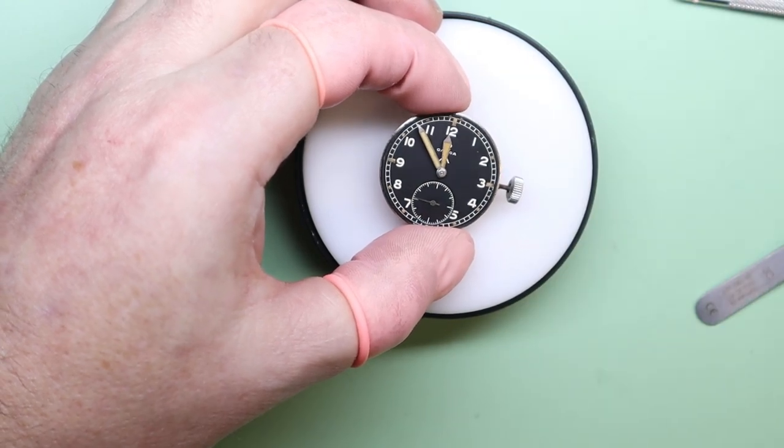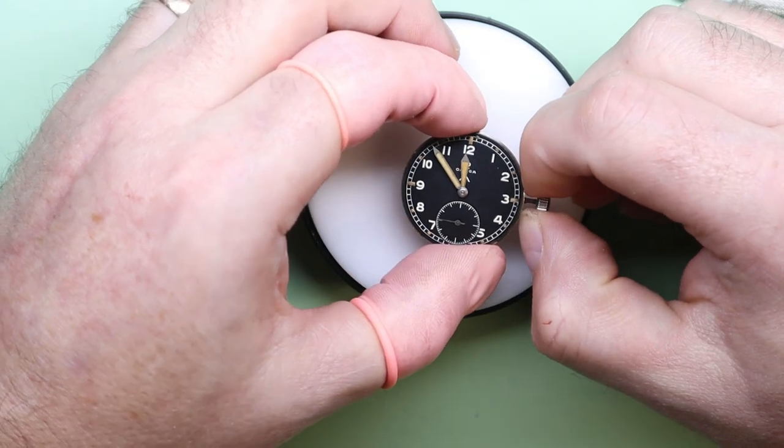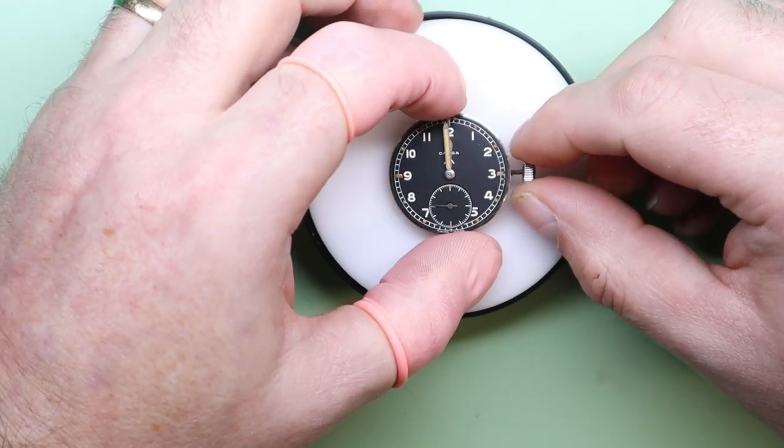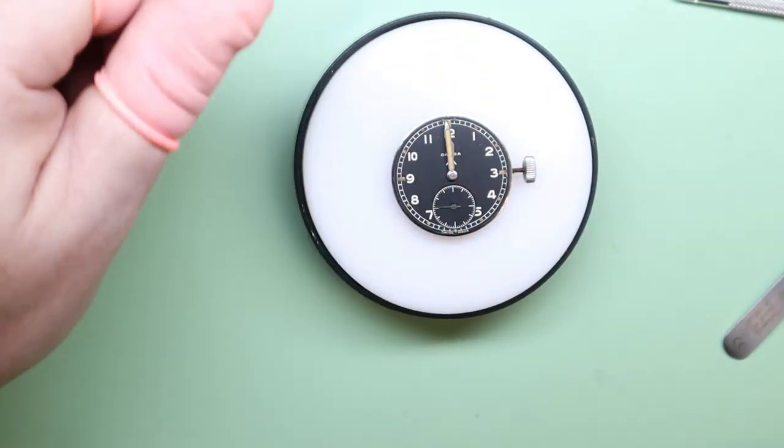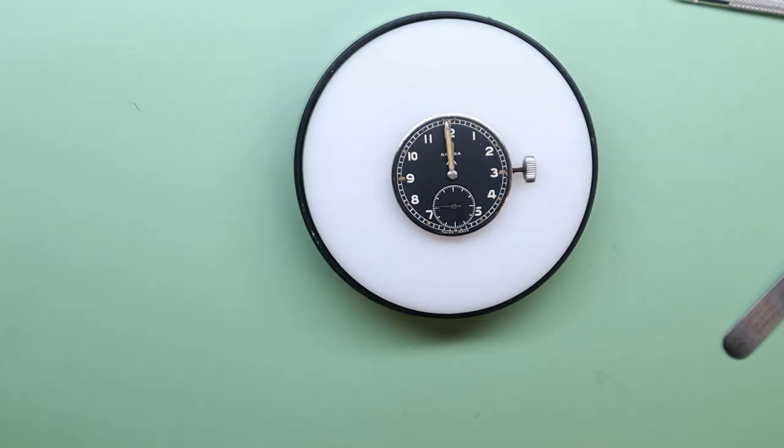So you can see the large sword style hour hand, the large minute hand filled with radium, although I'm not entirely sure it is radium because it looks like the lume on the hands has been changed at some point.